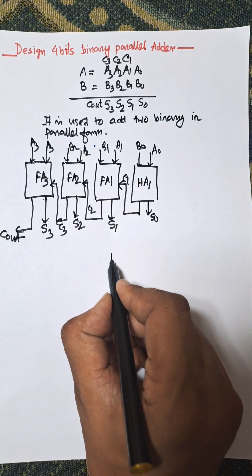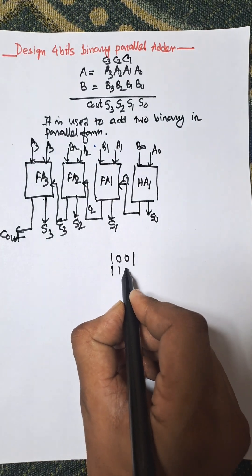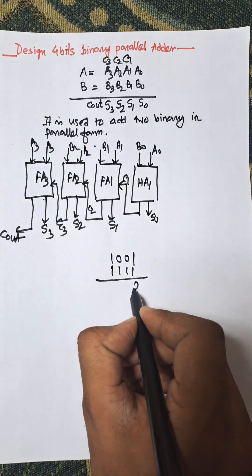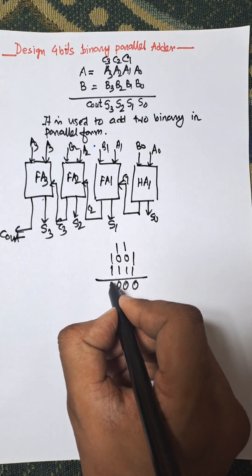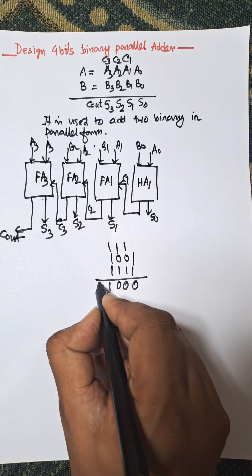So suppose the numbers are 1001 and 1111. Then 1 and 1 gives 10, carry goes to 1. Then 1, 1, and 0 gives 10, carry goes to 1. Then 1, 1, and 0 gives 10, and 1 is Cout.